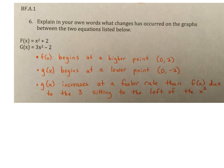G of X begins at a lower point at zero negative two. Again, you could say the vertex of G of X is lower as zero negative two. And then the last G of X increases at a faster rate than F of X due to the three sitting to the left of the X squared right there. So again, when it comes to, it says explaining your own words. These are Dr. Spears math teacher words.